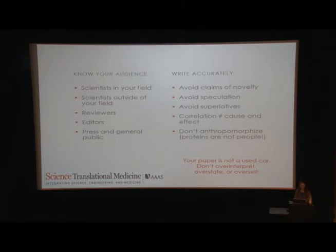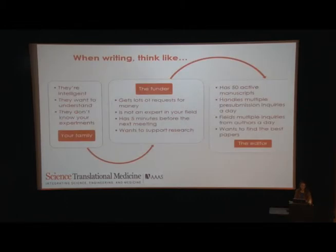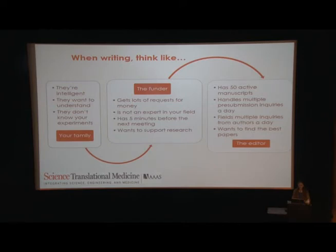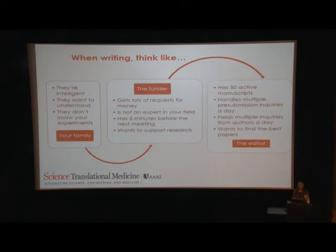Think like your family — they want to know what you're doing but they don't understand your experiments. Likewise, a scientist who's not in your field may not be familiar with terms or animal models you're using, so it's very important to provide enough background information that someone not immediately in your field can understand your study. Think like the funder who has five minutes to read your paper and wants to understand and support your research — you need to make what you're writing very clear so it's easy to understand the impact of your study. And think like the editor who has multiple manuscripts, emails, and pre-submissions — our job is really to find the best papers and showcase them in our journal. Use all the space you have in your research article to say what you really mean and to highlight the importance of your study.